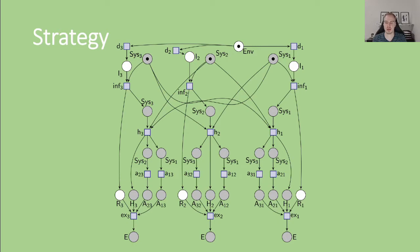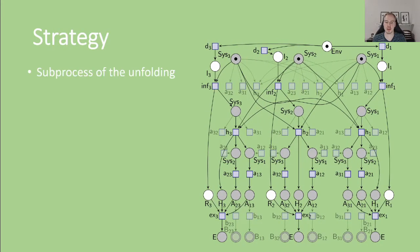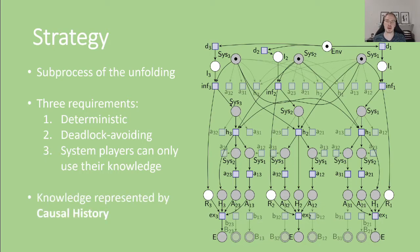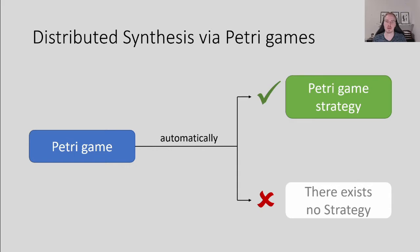Formally, a winning strategy is a sub-process of the unfolding satisfying three conditions. It must be deterministic, meaning that in no marking of the strategy, two transitions involving the same system player are enabled. It must be deadlock avoiding, which means that the system players must always give the possibility to continue. This is to exclude trivial solutions where the system just does nothing and therefore never reaches a bad place. Finally, the system players can only use their knowledge to exclude transitions from the strategy. This knowledge is represented by their causal history. The question now is: how do we get a winning strategy for the system players for a given Petri game?